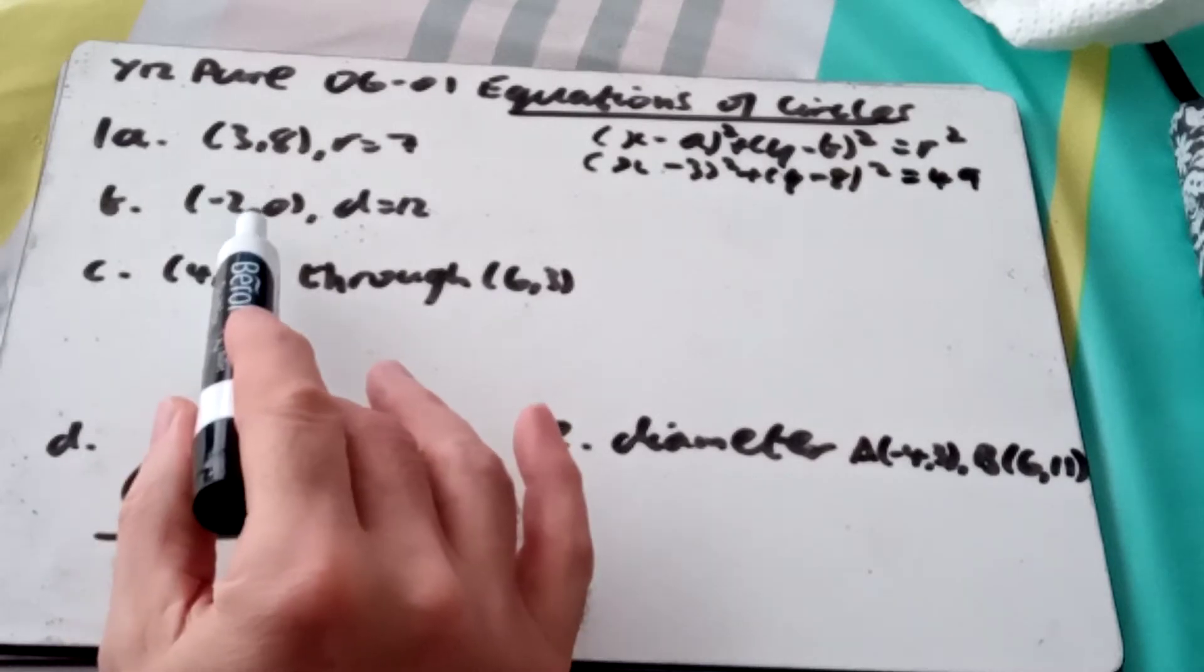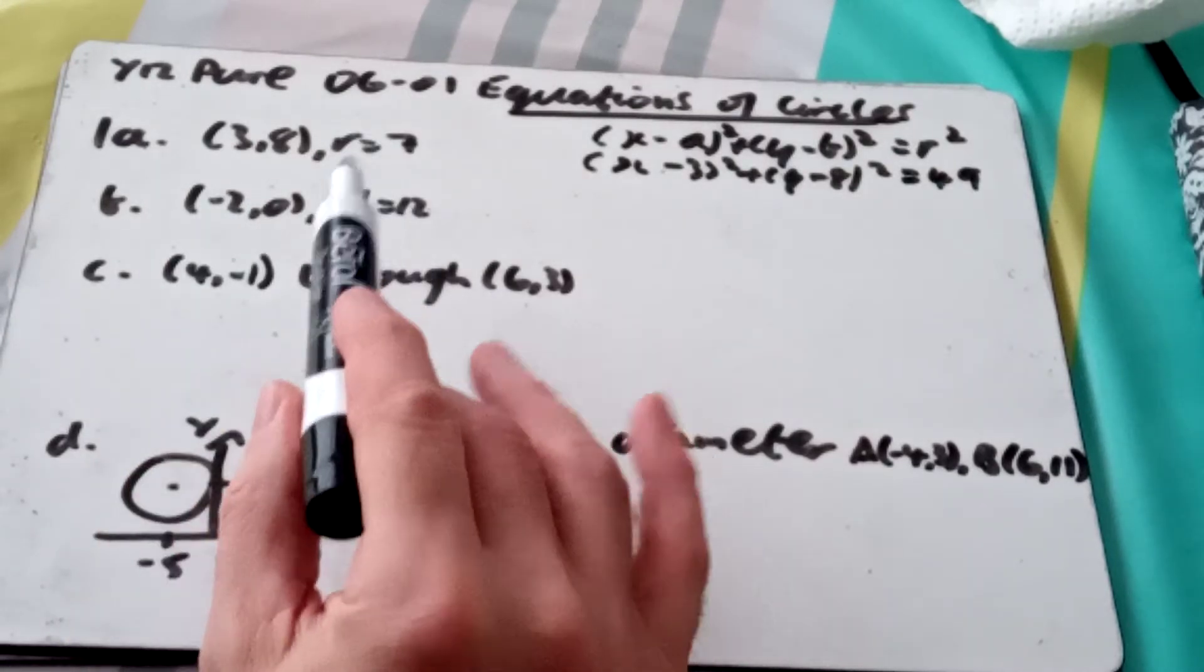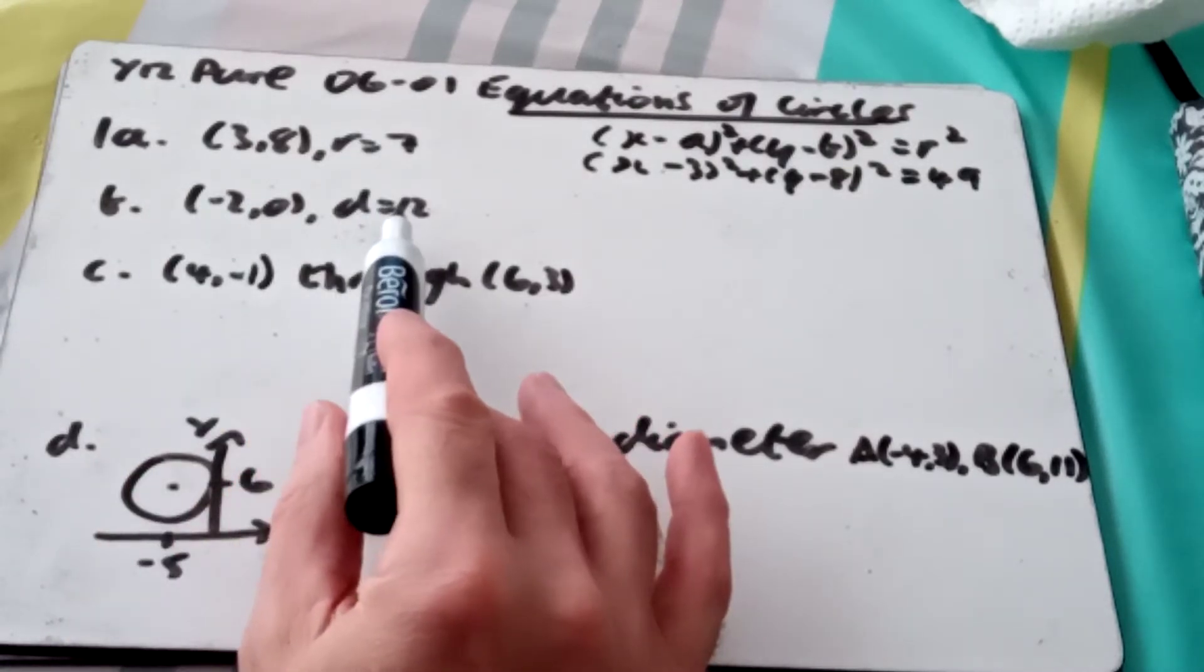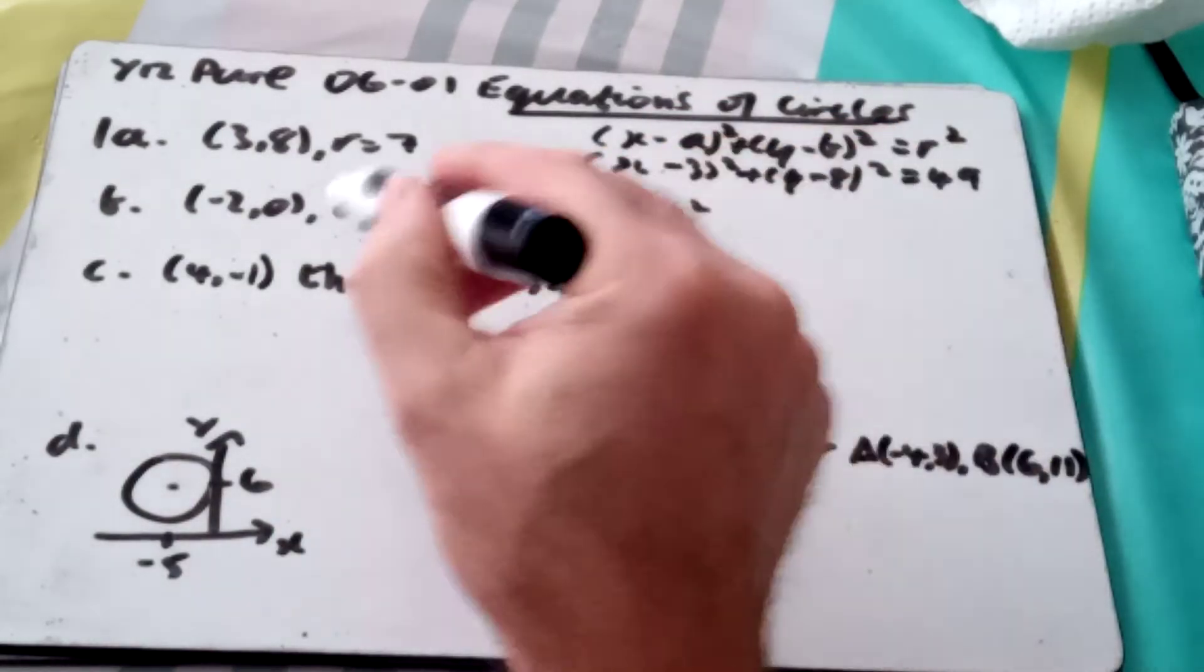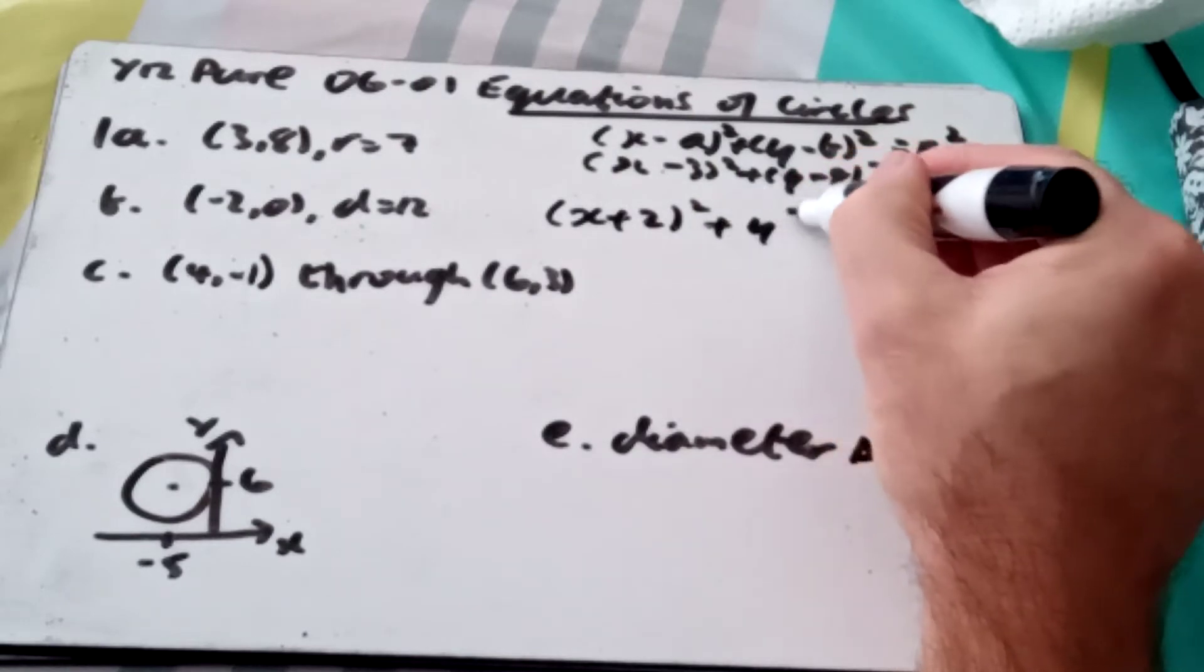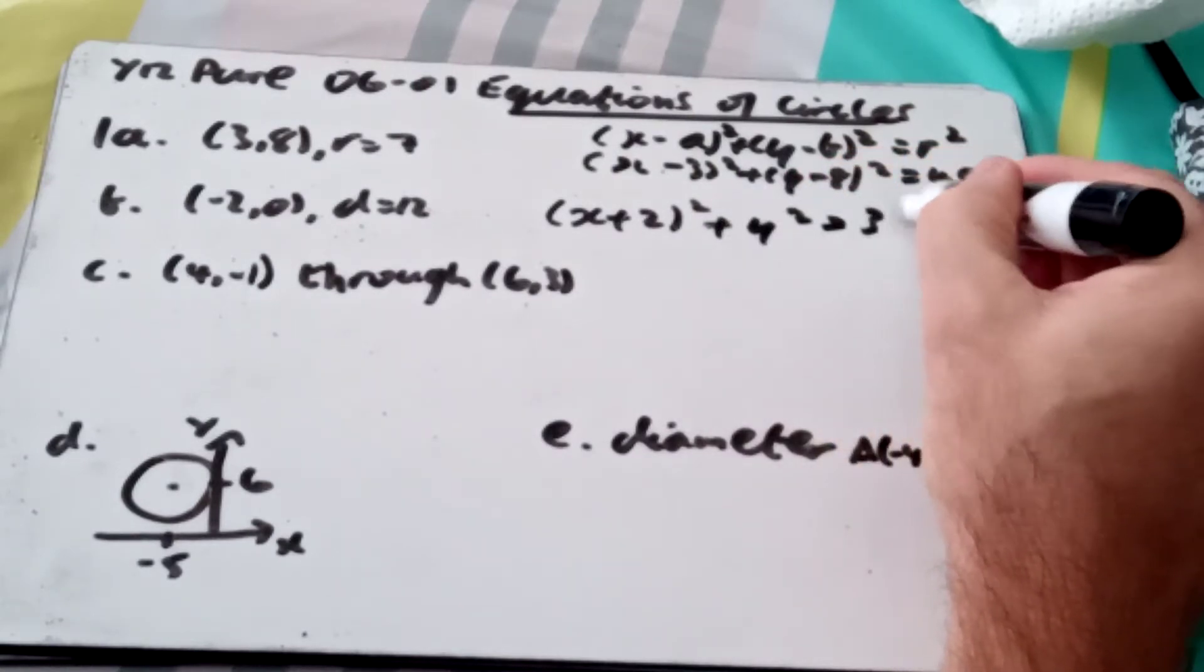And for b, center (-2, 0). We're given the diameter is 12, so we need to be aware that we need to halve it to get the radius of 6. So that becomes (x + 2)² + y² = 6², which is 36.